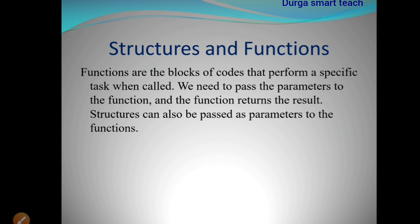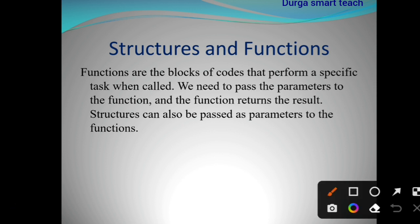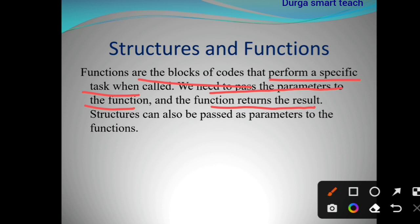We all know structure is used to store different data types in the same memory locations — means continuous memory locations — and functions are used to perform a specific task. Functions are a block of code that perform a specific task when called. We pass parameters to the function and the function performs the task and returns the result.